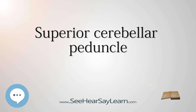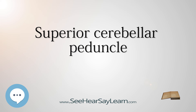The decussation is also known as the horseshoe-shaped commissure of Wernicke. It is important as an anatomical landmark, as lesions above it cause contralateral cerebellar signs, while lesions below it cause ipsilateral cerebellar signs.